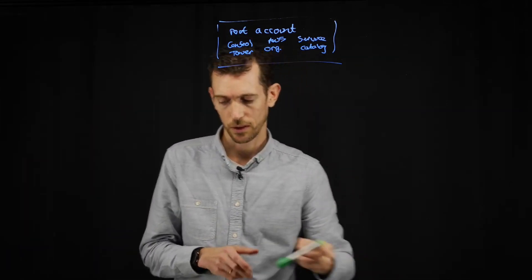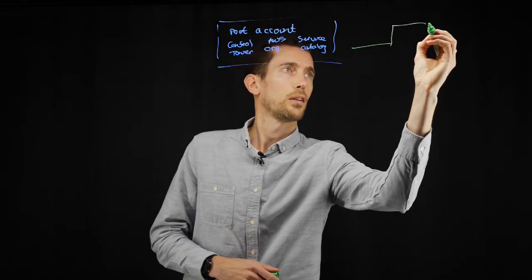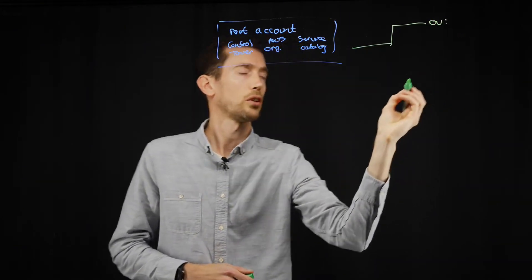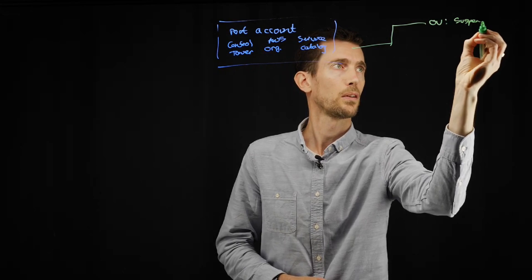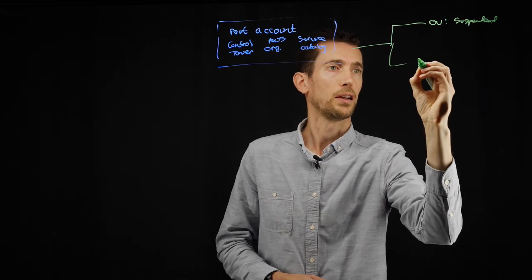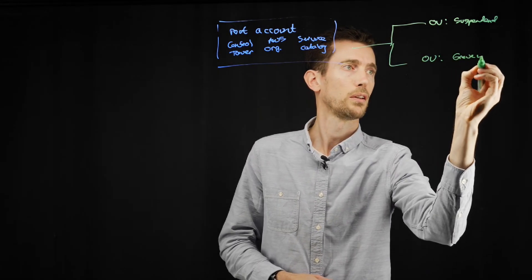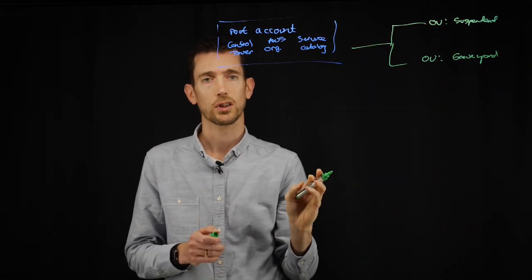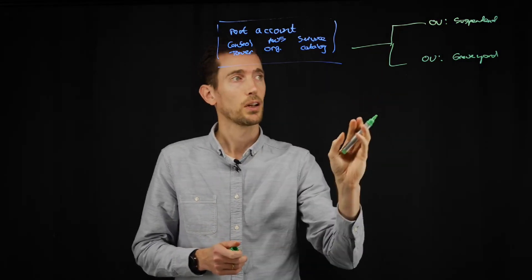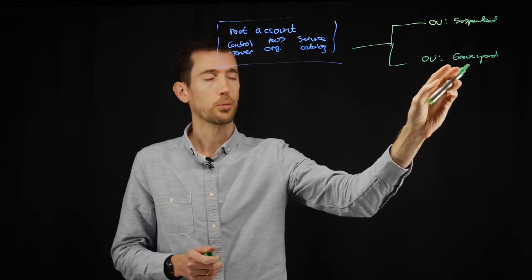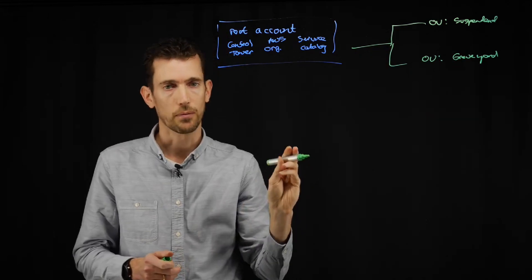So, underneath your root account, you would have your different organisational units. So an example would be suspended. And you might have another one for graveyard. So this is where you would put accounts which were no longer required or that you were in the process of decommissioning. So that allows a separate area for those.